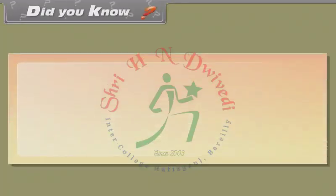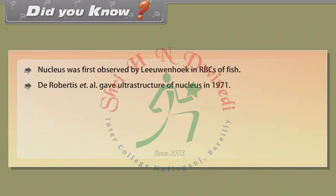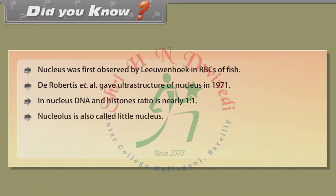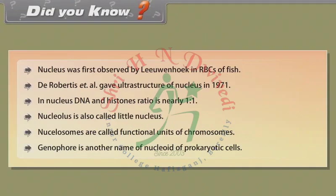Did you know? Nucleus was first observed by Leeuwenhoek in RBCs of fish. De Robertis et al. gave the ultrastructure of nucleus in 1971. In the nucleus, the DNA to histones ratio is nearly 1:1. Nucleolus is also called the little nucleus. Nucleosomes are called the functional units of chromosomes. Genophore is another name for the nucleoid of prokaryotic cells.